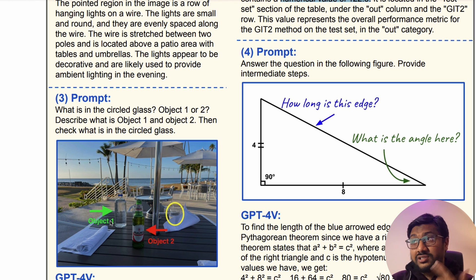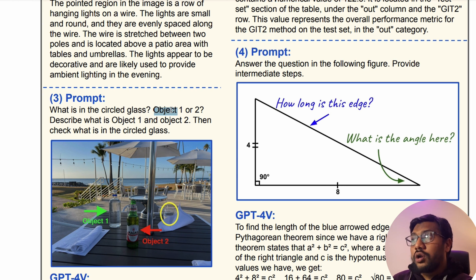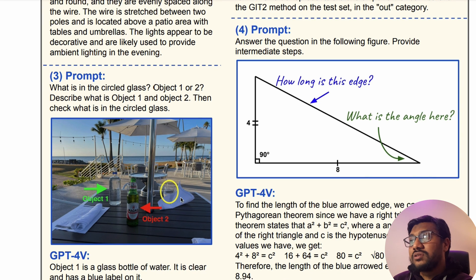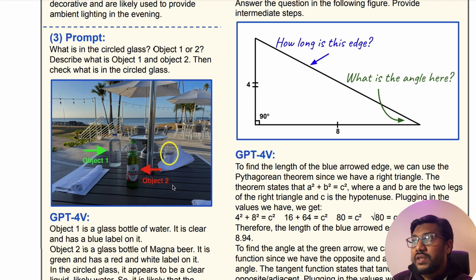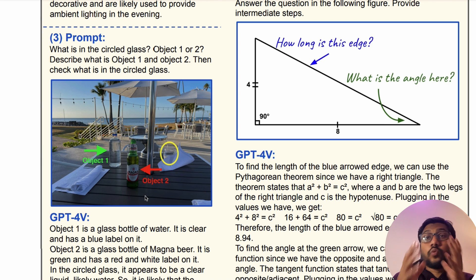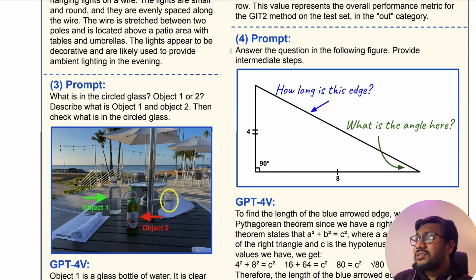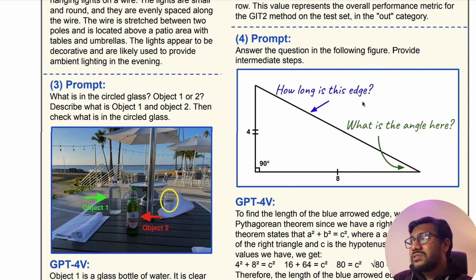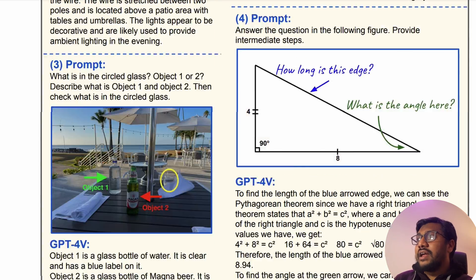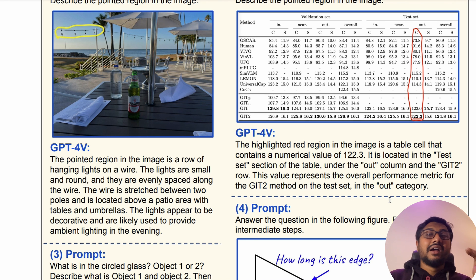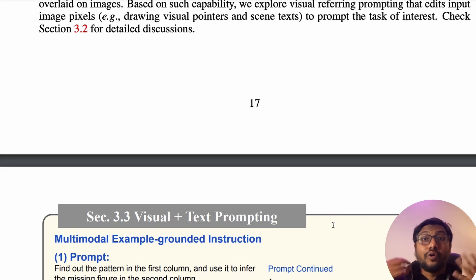You can also have multiple annotations in an image: 'What is in the circled glass — object one or object two? Describe what is object one, object two, then check what is in the circled glass.' You've labeled object one, object two, and the circled image, and it figures out what's inside each. Another example: 'Answer the questions in the following figure, provide intermediate steps.' With a right angle triangle, you ask how long is this edge and what is the angle, and it calculates all the details.